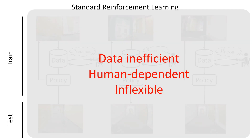The standard reinforcement learning paradigm is data inefficient because each control policy has to be retrained from scratch, human-dependent because the human has to label the data with the reward, and inflexible because each control policy can only accomplish a single task.